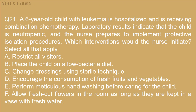Question 21: A 6-year-old child with leukemia is hospitalized and is receiving combination chemotherapy. Laboratory results indicate that the child is neutropenic and the nurse prepares to implement protective isolation procedures. Which interventions would the nurse initiate? Select all that apply. A. Restrict all visitors. B. Place the child on a low bacteria diet. C. Change dressings using sterile technique. D. Encourage the consumption of fresh fruits and vegetables. E. Perform meticulous hand washing before caring for the child. F. Allow fresh cut flowers in the room as long as they are kept in a vase with fresh water.